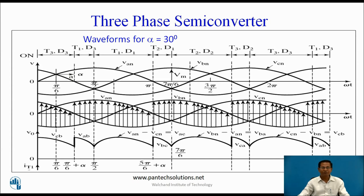These are the waveforms for α = 30 degrees. At ωt = π/6 + α, T1 and D3 are forward biased, so a pulse is applied to T1 and current flows through source → T1 → load → D3. The effect of Vab appears across the load and T1, D3 continuously conduct up to π/2. After π/2, phase C becomes more negative, so D3 becomes reverse biased and D1 becomes forward biased; current flows through T1 and D1, and Vac appears across the load. T1 and D1 continuously conduct up to the end of the half cycle. At ωt = π/6 + α, T2 and D1 become forward biased and phase voltage Vbc appears across the load. In this way, the operation repeats.